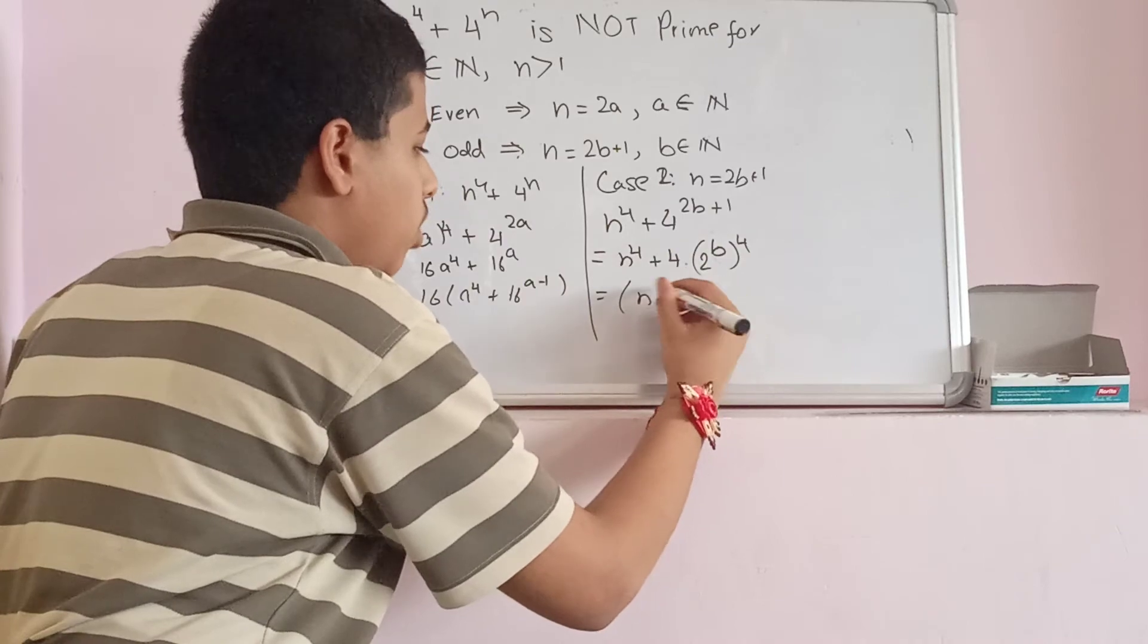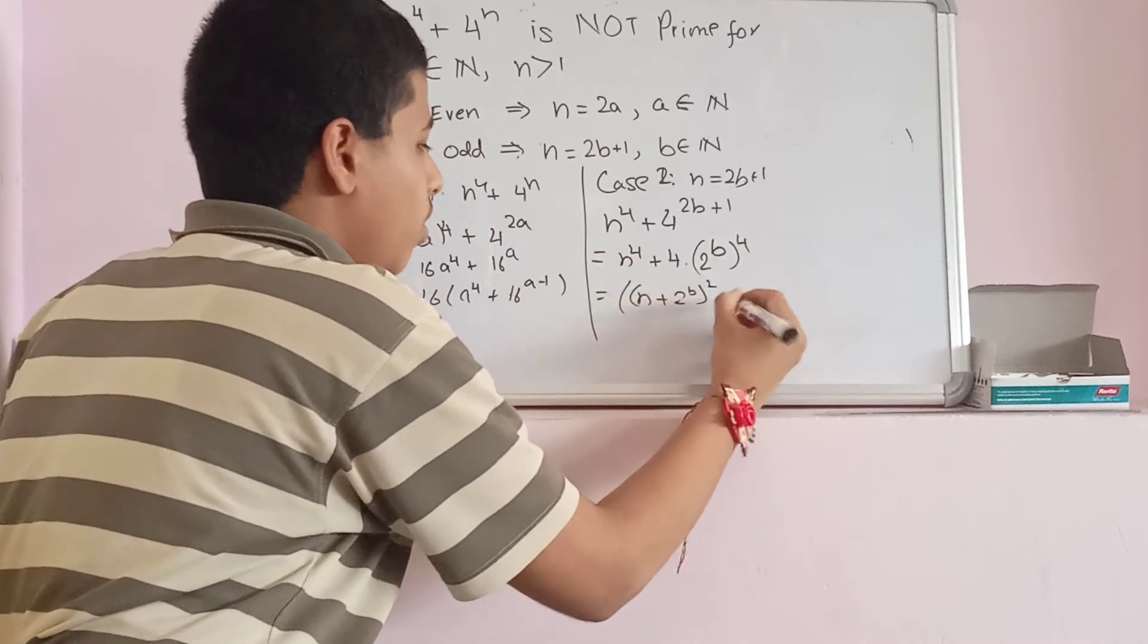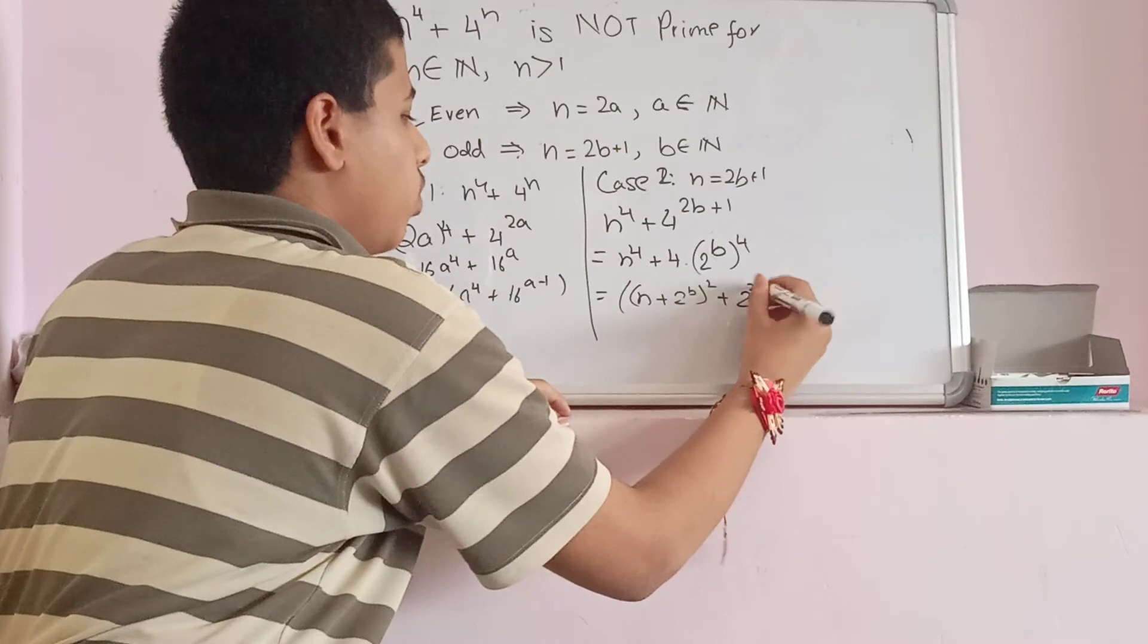So, (n^2 + 2^b)^2 + 2^(2b) multiplied by (n^2 - 2^b)^2 + 2^(2b).